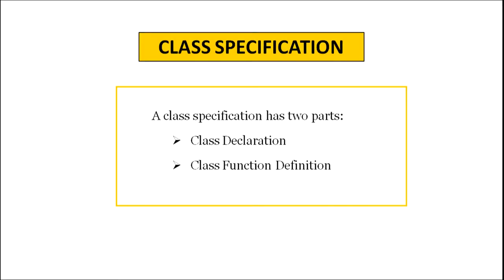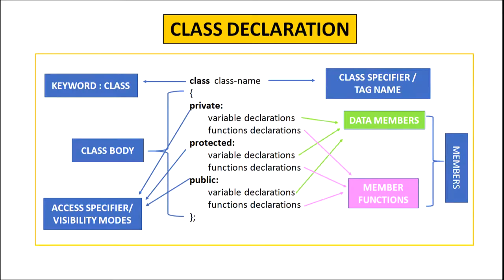Now class specification has two parts: class declaration and class function definition. The class declaration starts with the keyword class followed by the name of the class, also known as class specifier or tag name. The body of the class is enclosed within curly braces and terminated by a semicolon. Within the class, variables and functions are declared. The variables declared within the class are called data members and the functions declared within the class are called member functions. Together, data members and member functions are called members of the class.